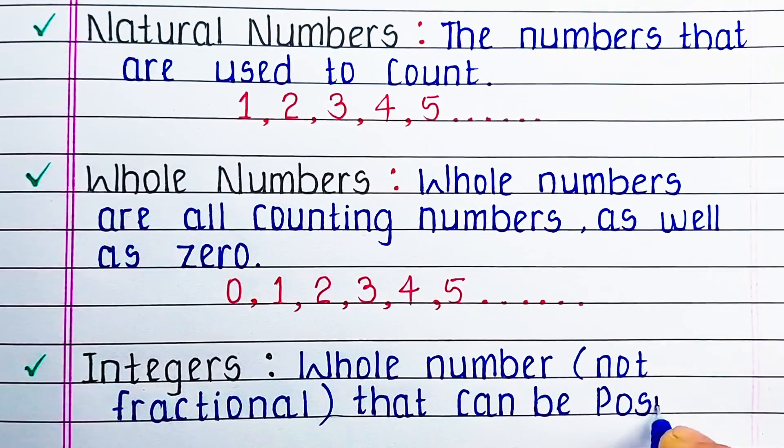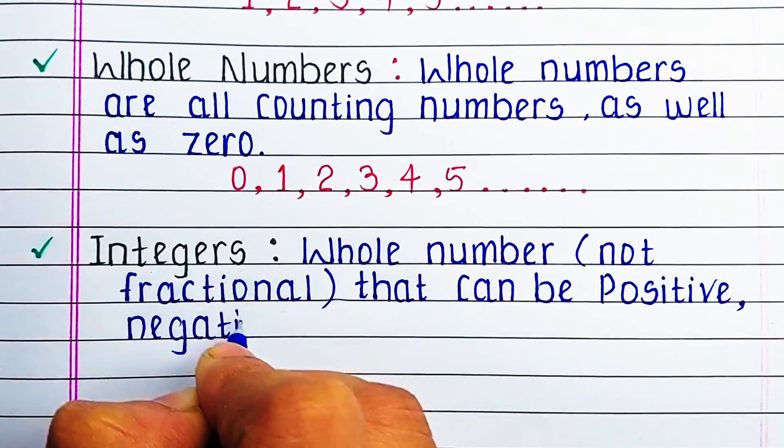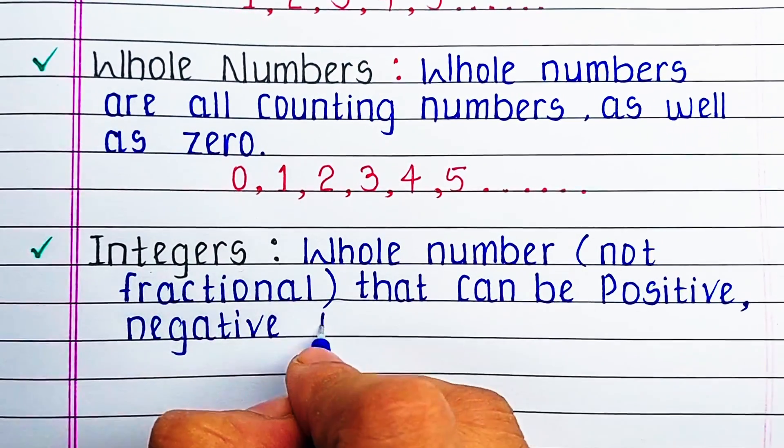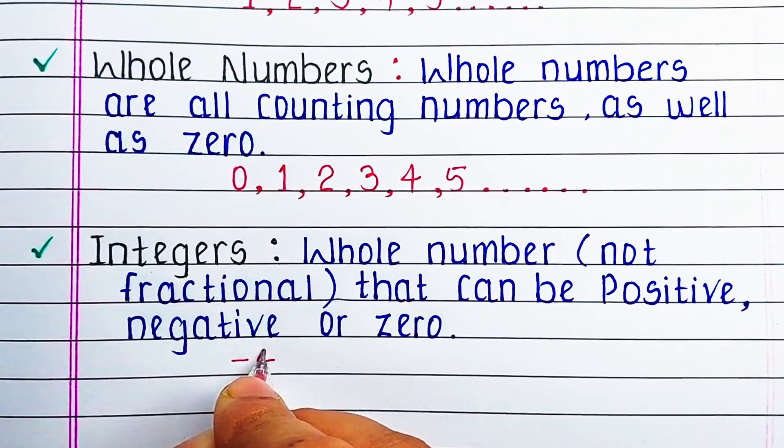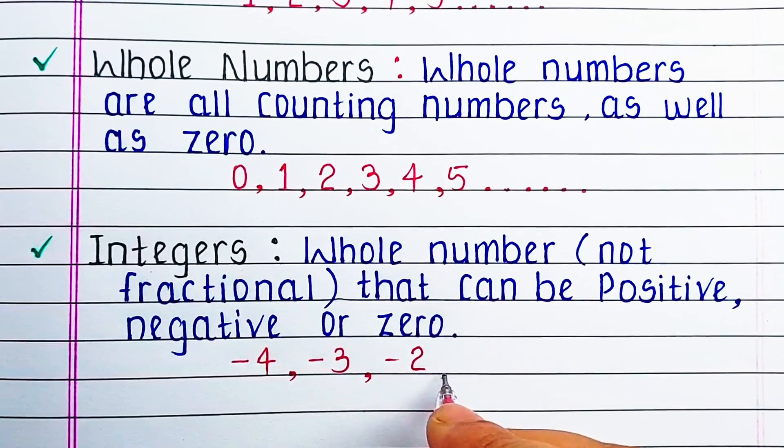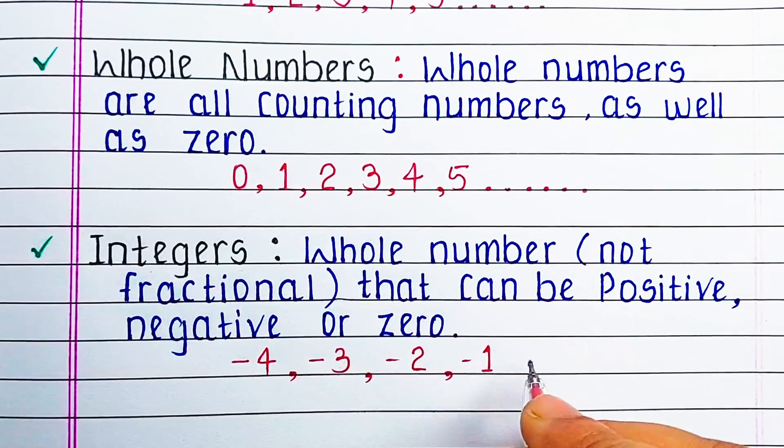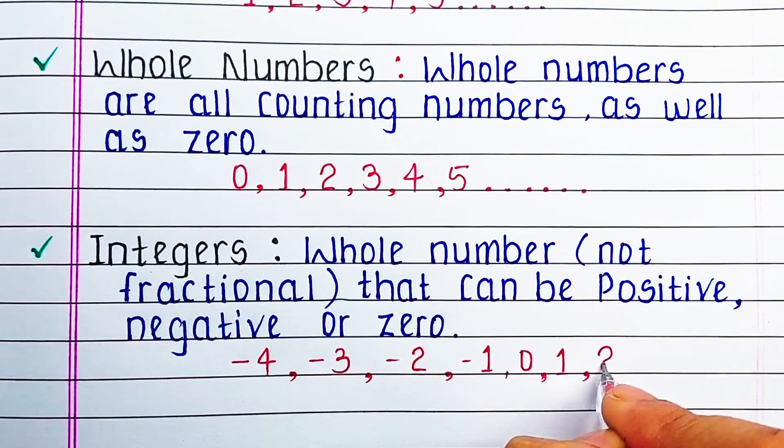Next is integers. Integers are the types of numbers which are whole number, not fractional, that can be positive, negative or 0. For example, minus 4, minus 3, minus 2, minus 1, 0, 1, 2, 3, 4 and so on.